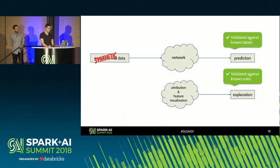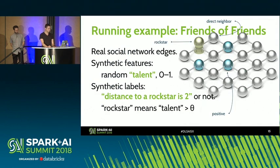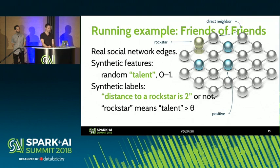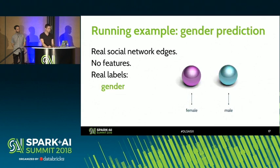One of the examples is the three friends example, where each vertex has to have at least three rockstar friends directly connected to it. The friends of friends example is where each vertex has to have a rockstar at least two hops away — the direct neighbors of the rockstars are considered negative. One real dataset is age prediction on a social network, where we divided ages into four equal-size buckets. The other real dataset is a social network where we predict the gender of people.